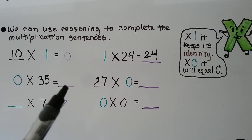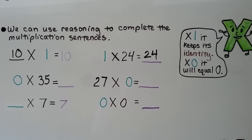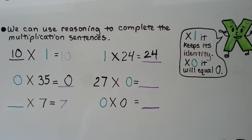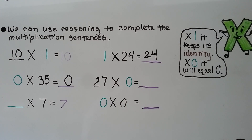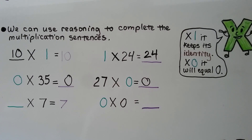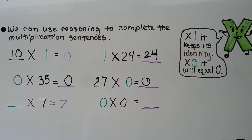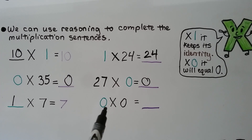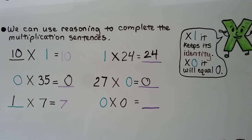0 times 35 is equal to... Remember, the zero property of multiplication says when we multiply a factor by 0, the product will be 0. So as soon as we see that 0, we know the answer — the product is 0. Something times 7 is equal to 7. What can we multiply times 7 so that 7 keeps its identity? If you said 1, you're right. 0 times 0 — this factor is being multiplied by 0, so the product must be 0 according to the zero property of multiplication.